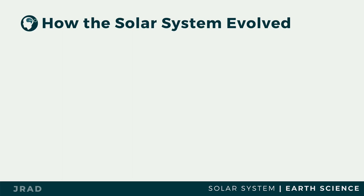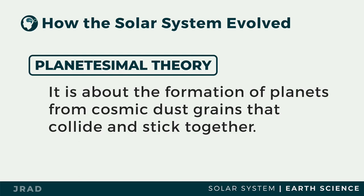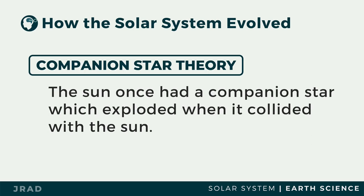There are some significant theories that explain the beginning of the solar system. One of these is the planetesimal theory, which gives information about the formation of planets from cosmic dust grains that collide and stick together. The companion star theory states that the Sun once had a companion star which exploded when it collided with the Sun.